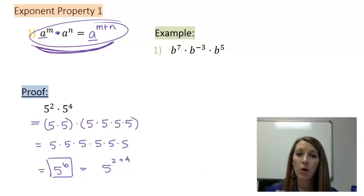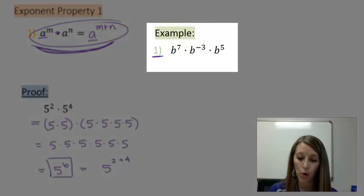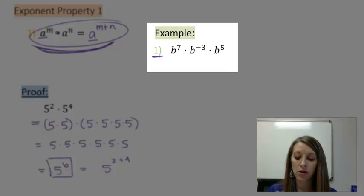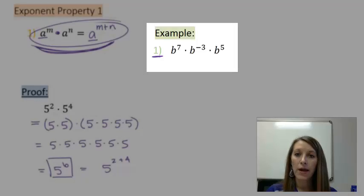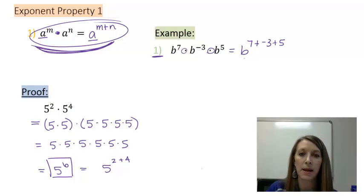So let's see how we would actually work this out in a homework problem. And I have example over here, example number one. So I have b to the seventh times b to the negative third times b to the fifth. Well, I have all the same bases that are multiplied, so that means this property applies and I can just add these numbers in the exponent on the same base.